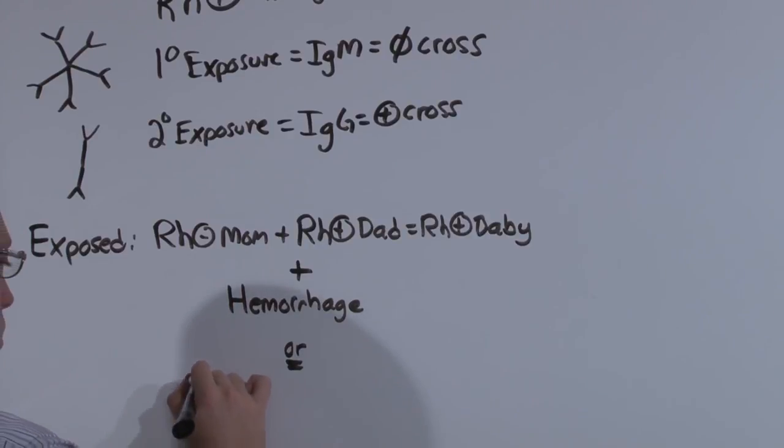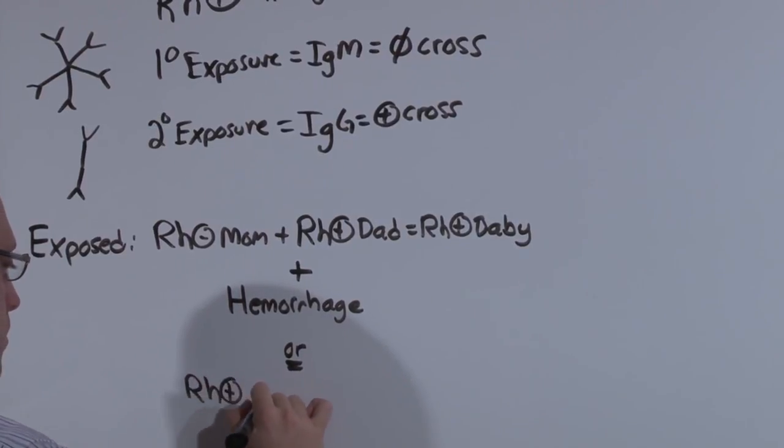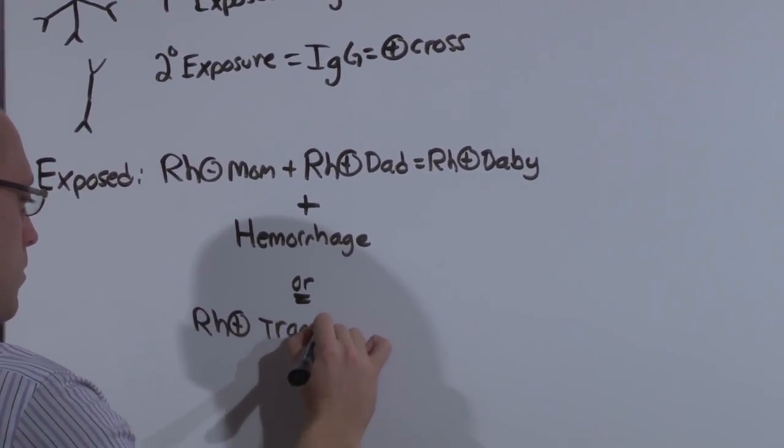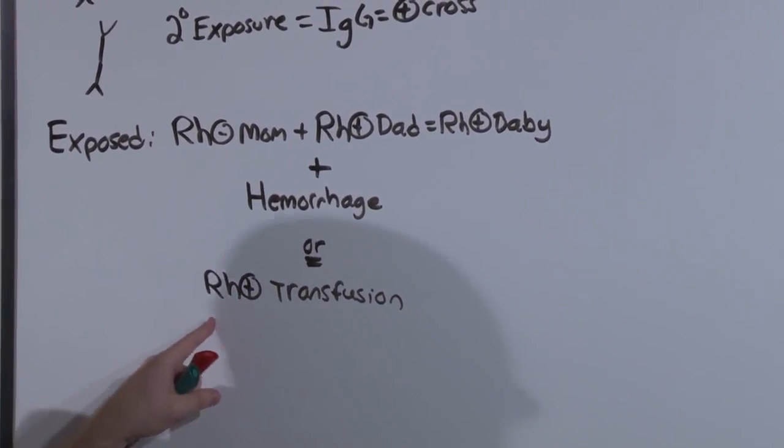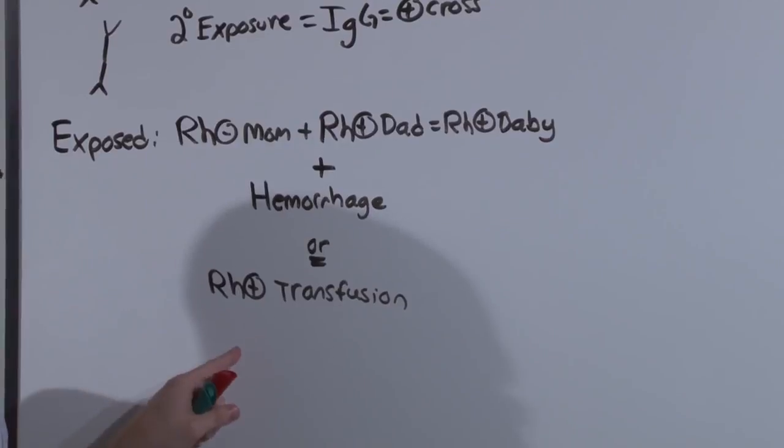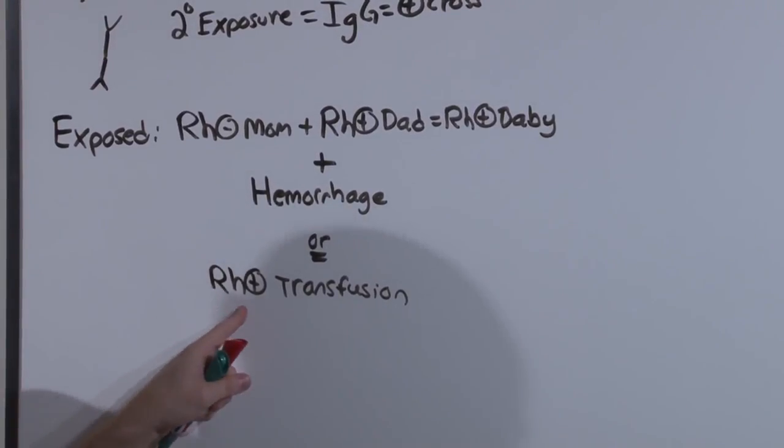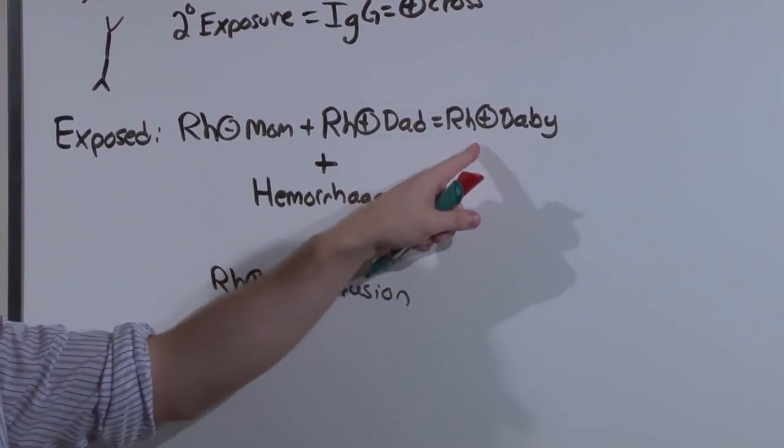Or, this doesn't really happen anymore since we screen blood, mom could have received an Rh positive transfusion, which because it's not an ABO mismatch may not have caused a serious reaction in mom, but it may have primed her against future Rh positive babies.